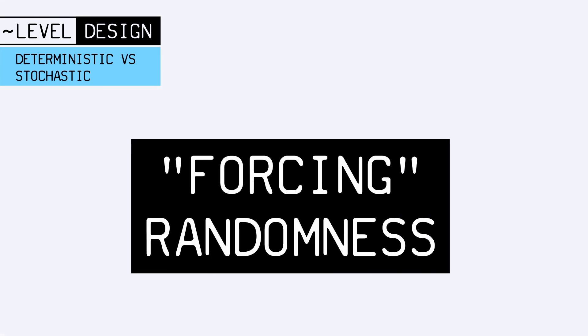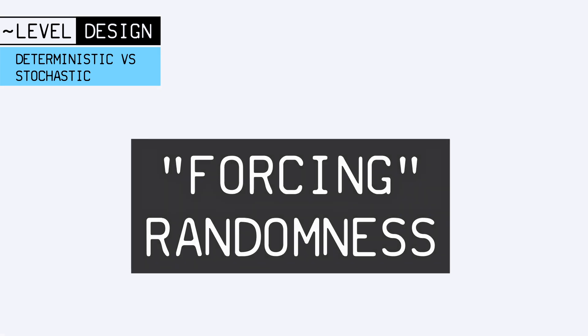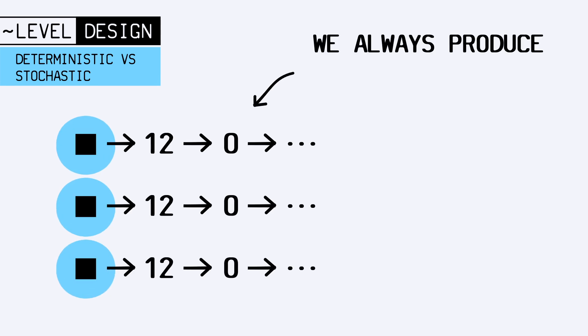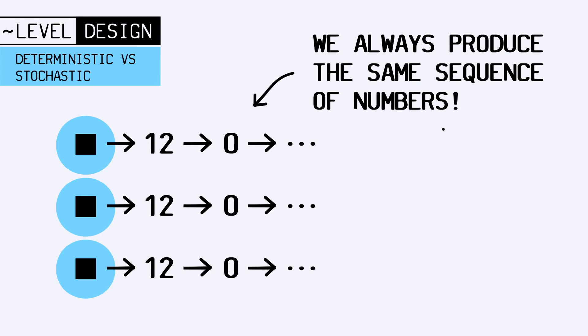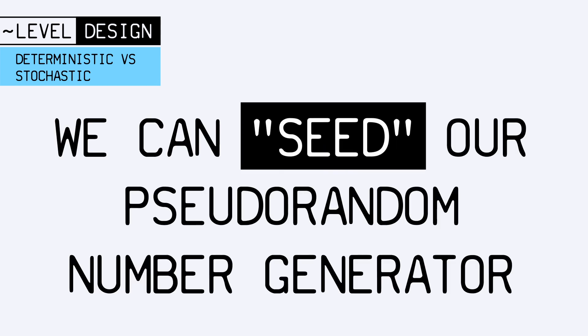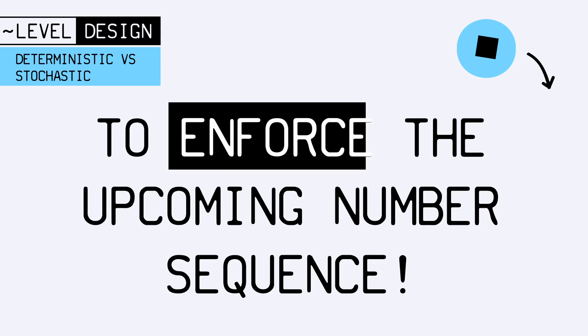Finally, forcing randomness is the idea of playing around with a stochastic process's random number generation so that it always produces the same sequence, therefore making the process itself deterministic. So by seeding a random number generator and setting its start point to a specific value, you effectively force the upcoming sequence of numbers, and so they're not that random anymore.